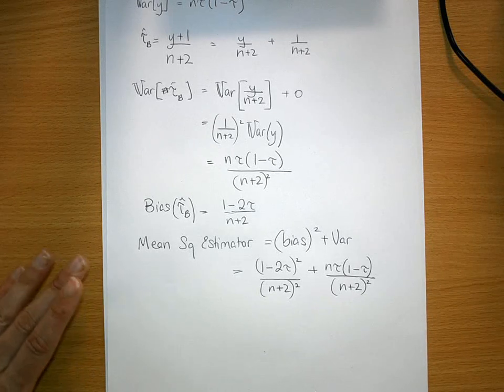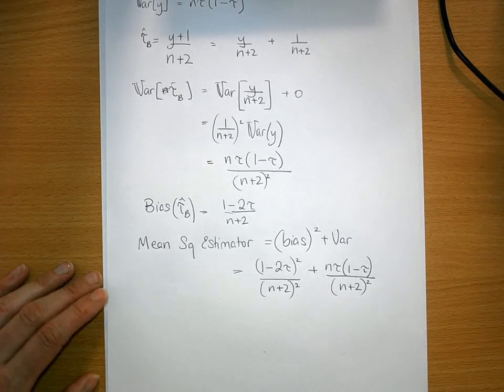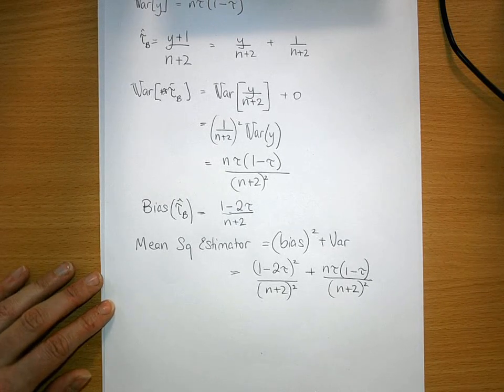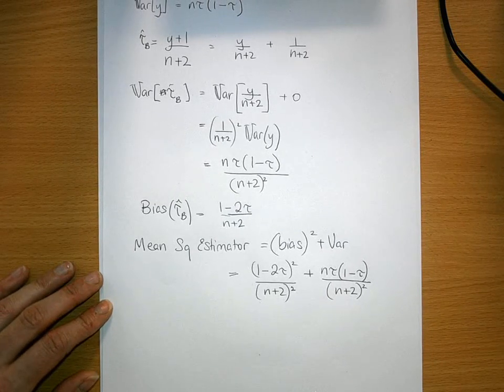And that's the bias, the variance, and the mean square of the estimator - not of the distribution.